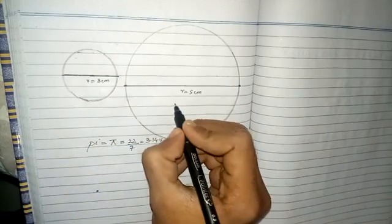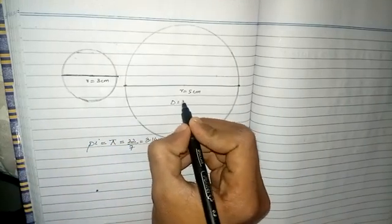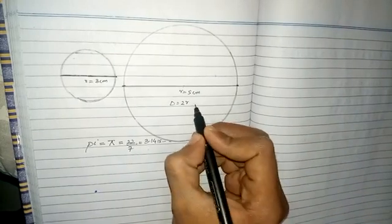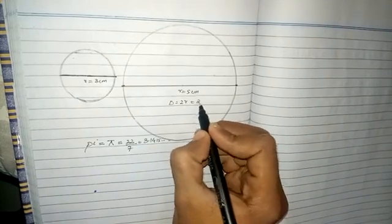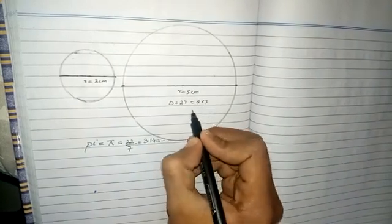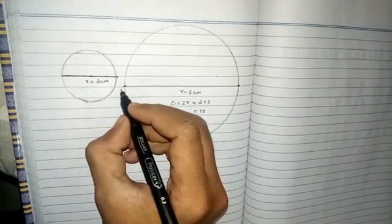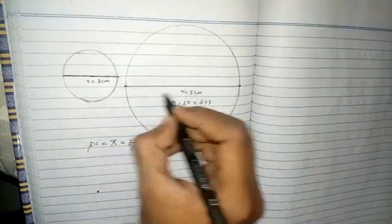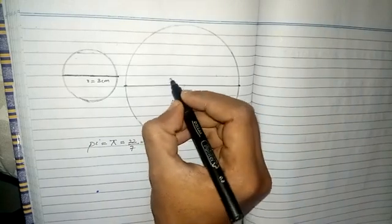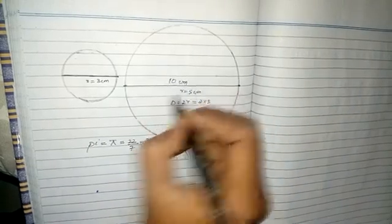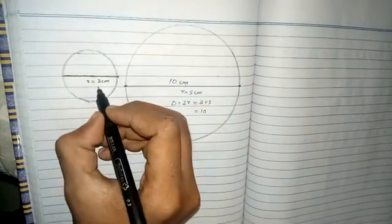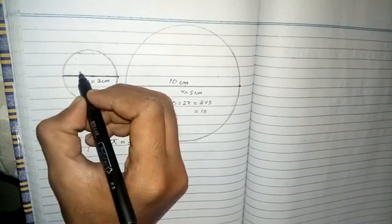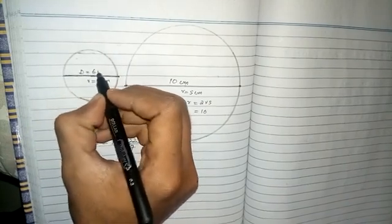As we know, the diameter is 2 times the radius. Therefore it will become 2 × 5, which is 10, so the length of this whole line — the diameter of the circle — is 10 cm. Similarly, the diameter of this circle is 6 cm.